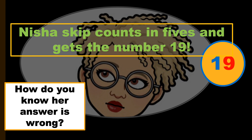Here's where I want you to put on your thinking cap. I want you to think about this. Nisha skip counts in fives and gets the number 19. How do you know that Nisha's answer is wrong? Can you think really hard about what I said the pattern is with all the numbers counting in fives? That's a clue — use it. I'm going to give you some time to discuss your answer with a partner, and then I'll come back and show you exactly why Nisha is wrong.